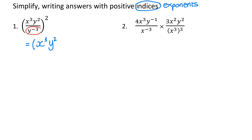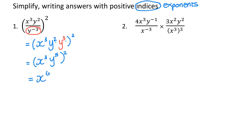So I'm going to get x cubed y squared. And the y to the power of negative 3 can be written as y to the power of 3 in the numerator, which means I'm left with 1 in the denominator — and I'm not going to write that. And I'm going to square everything. Simplifying inside further: x cubed, y to the power of 2 plus 3 is y to the power of 5, all squared. So that's going to give me x to the power of 6, y to the power of 10.